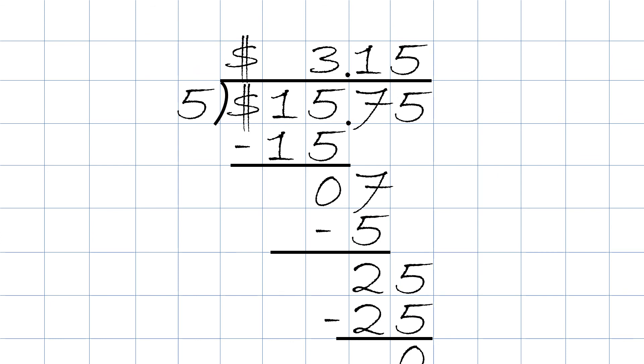So $15.75 divided by five people or among five people, each person will get $3.15.